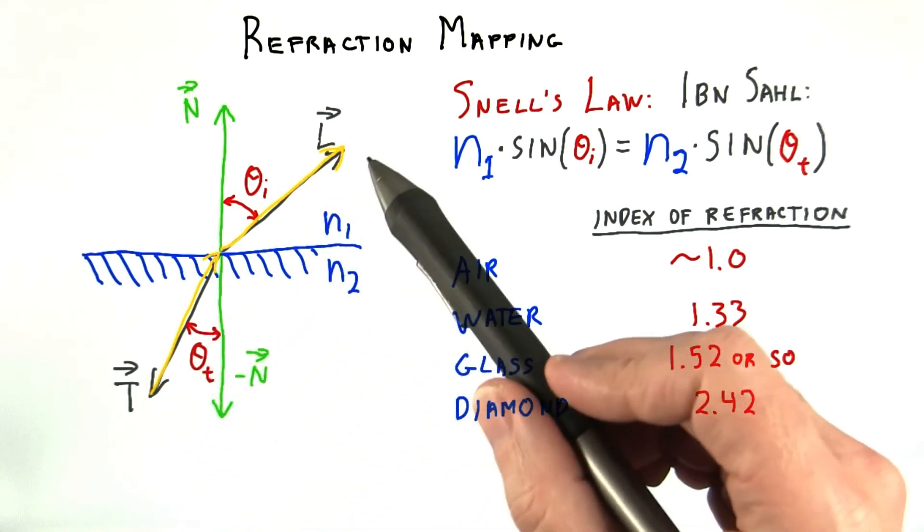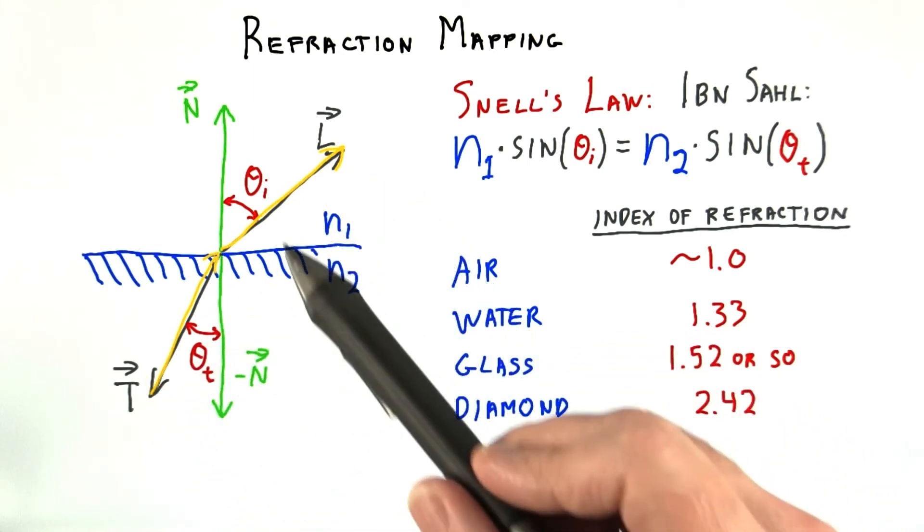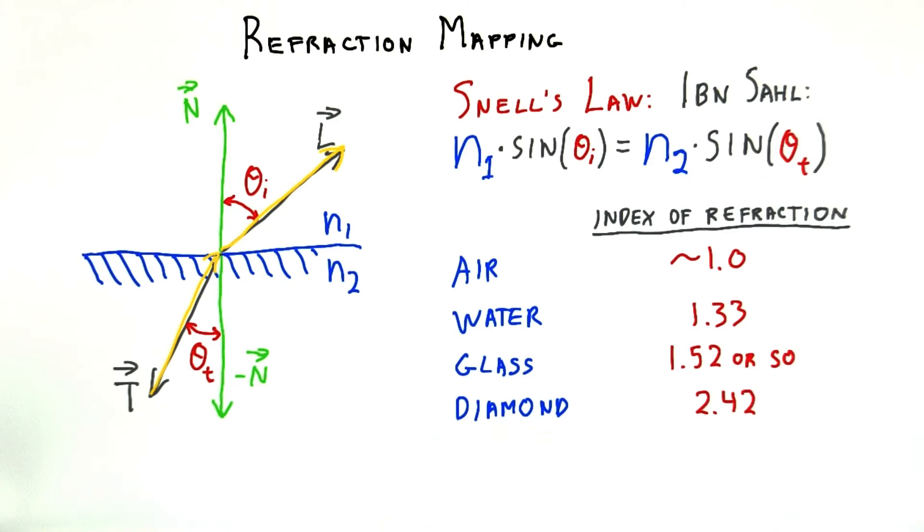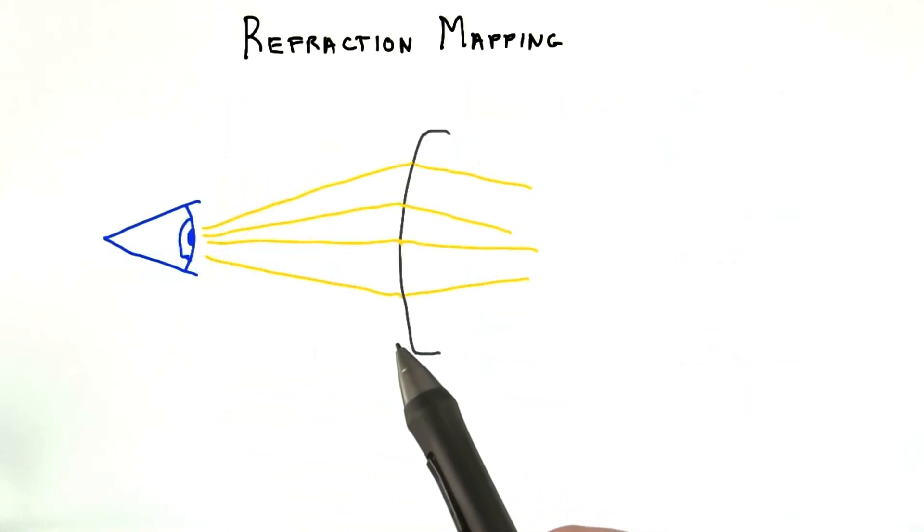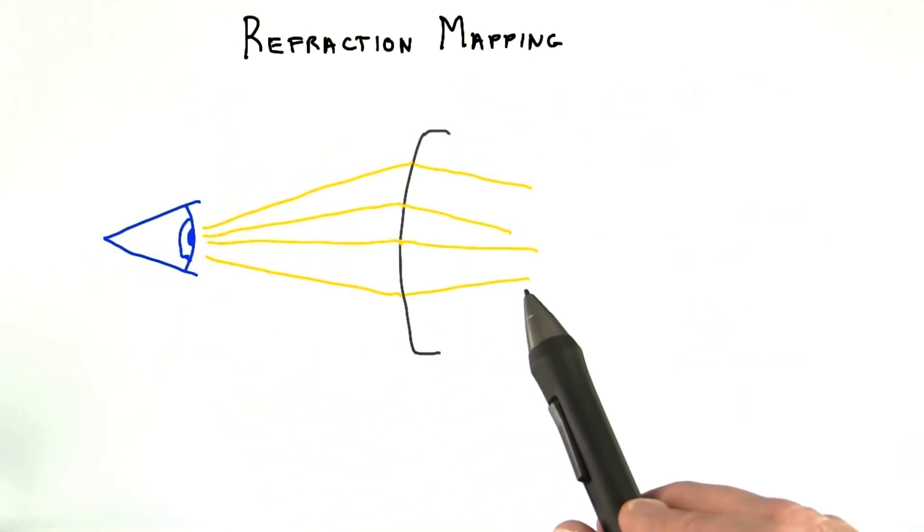The effect is reversed in the other direction. Going from glass to air causes the light to bend at a greater angle. This is what refraction mapping does. It changes the direction of the light passing through the transparent object.